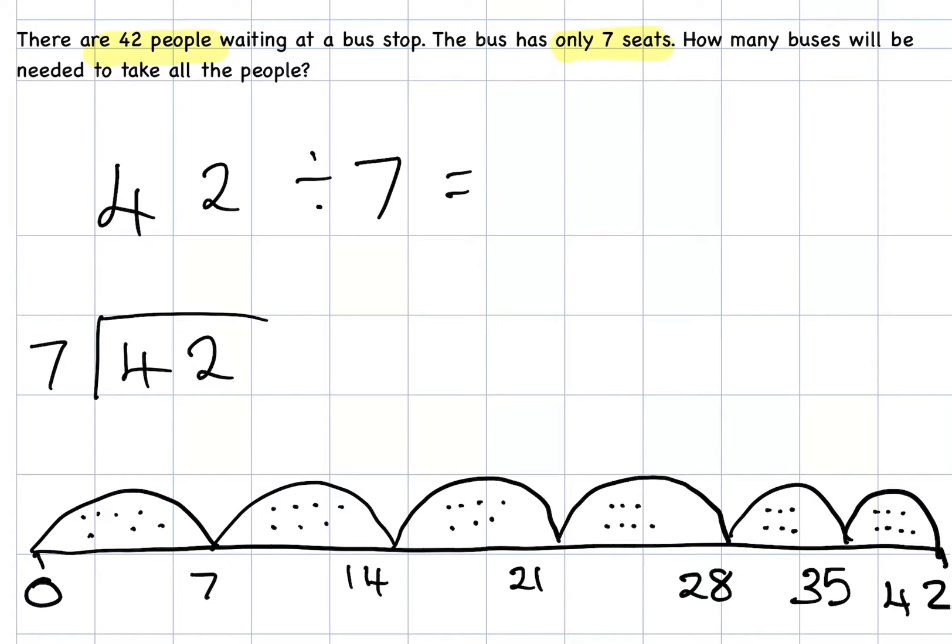So now, we can work out how many buses were needed to take all these people. 1, 2, 3, 4, 5, 6. 6 buses were needed to take all the people to where they needed to be. Let's check the context of the problem. Definitely buses. So, my answer needs to state clearly that it was 6 buses that took all those people.